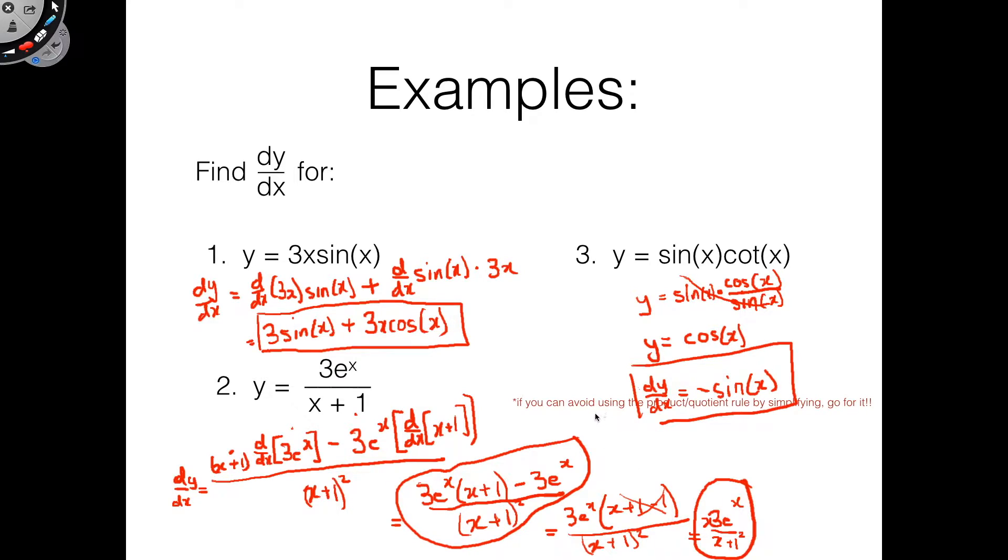What I'm saying is if you can avoid using the product or quotient rule by simplifying then go for it. Just like you don't have to use the definition of the derivative to find a derivative, you don't have to use the product and quotient rule. Granted they are convenient and let you do things you may otherwise not be able to do, but they are still a little bit tedious. So if you can avoid using them then that's brilliant, go for it.